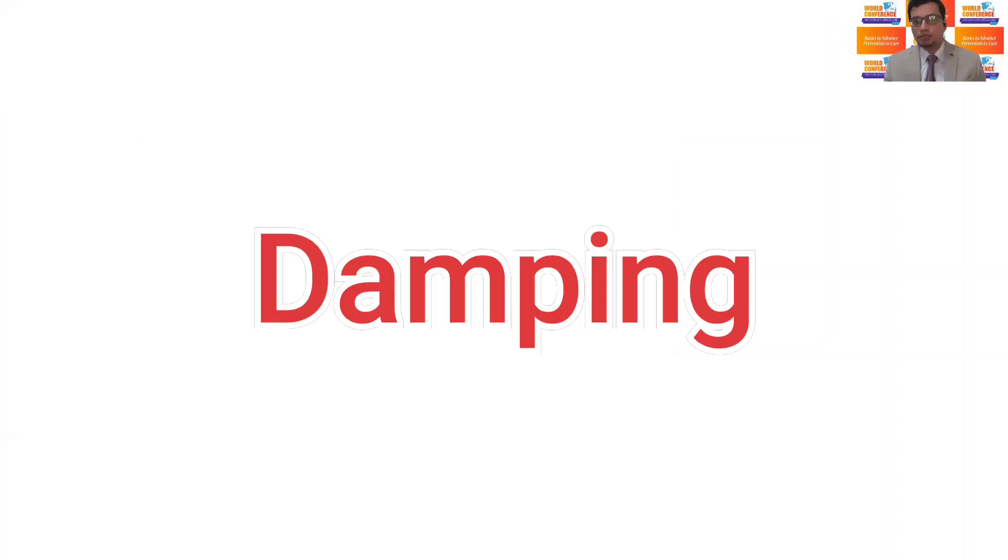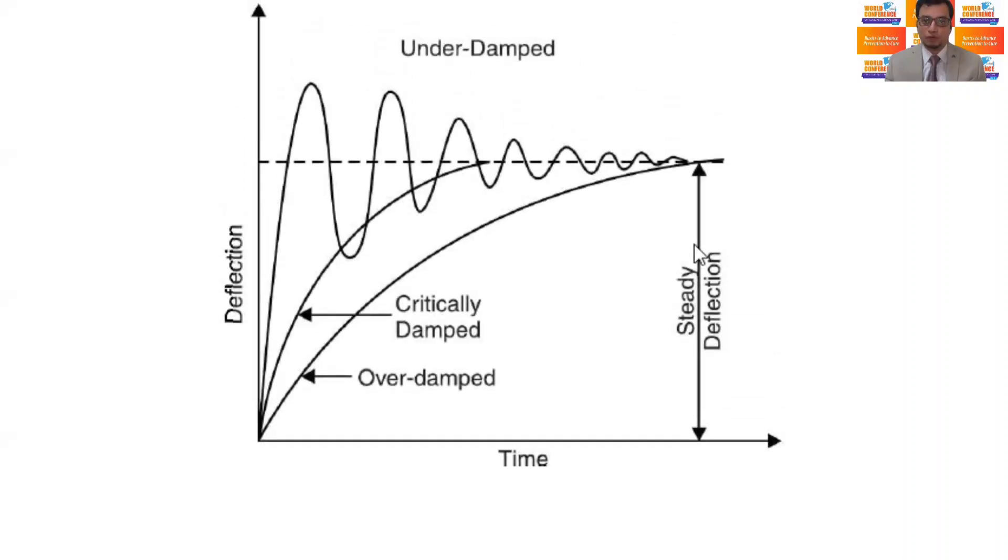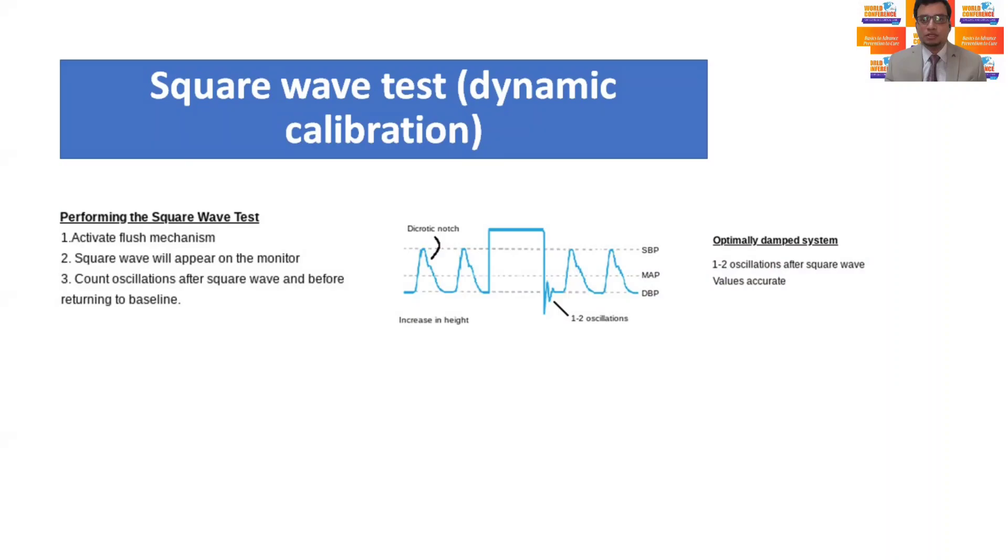Now let's talk about damping. The damping indicates the tendency of an oscillating system to return to its resting state. Anything that takes energy out of the system results in the progressive diminution of the amplitude of oscillations.